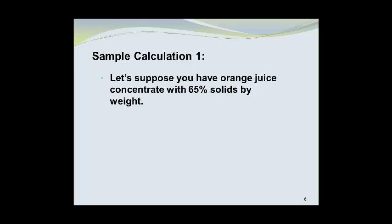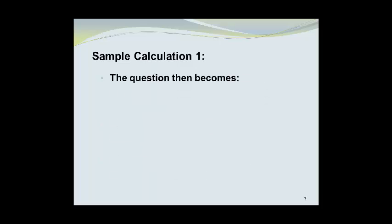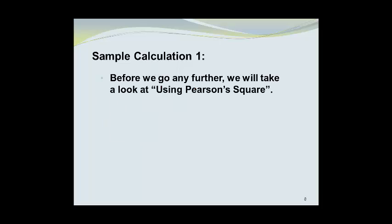Let's take a look at a sample calculation. We're going to suppose that we have orange juice concentrate with 65% solids by weight. These solids are predominantly sugars. We want to make a 10% solids product from this concentrate. The question then becomes, how much concentrate and how much water should be mixed together to get the desired 10% solids in the final mixture? Before we go any further, we will take a look at using Pearson's Square. Then we can come back to this problem.